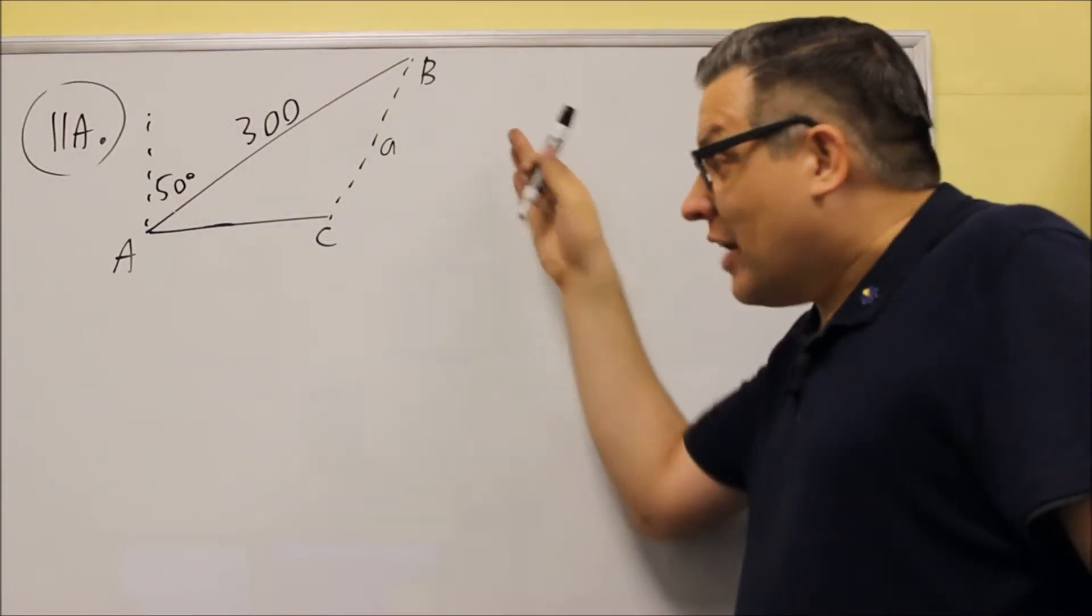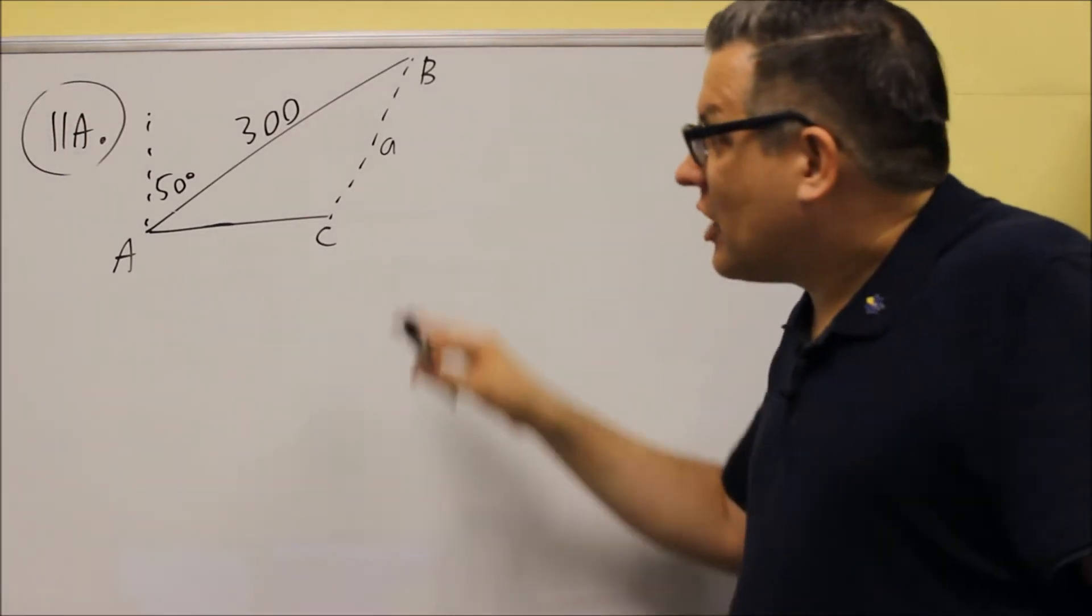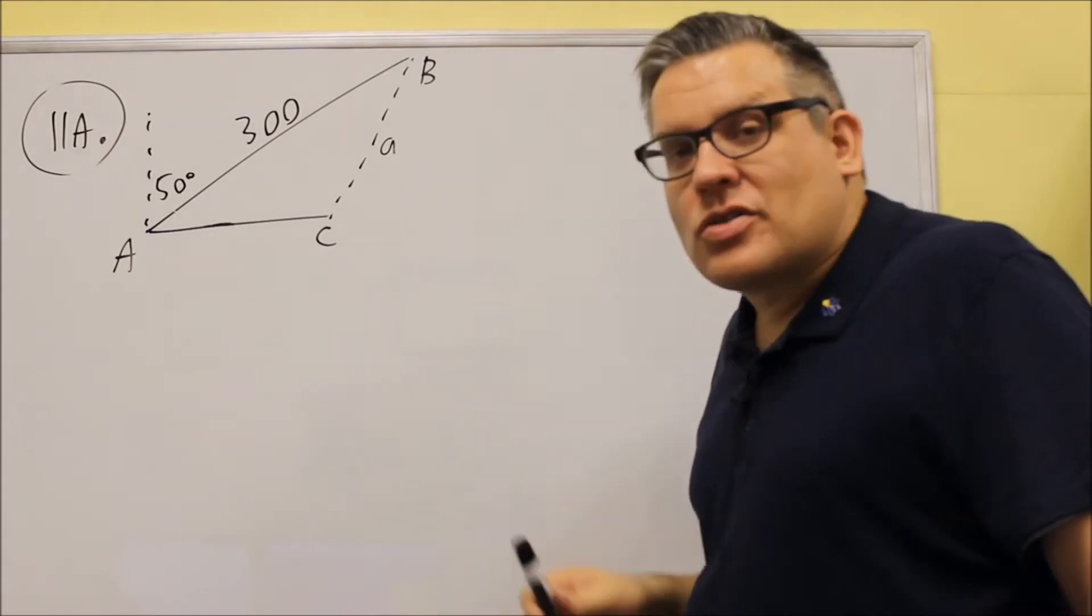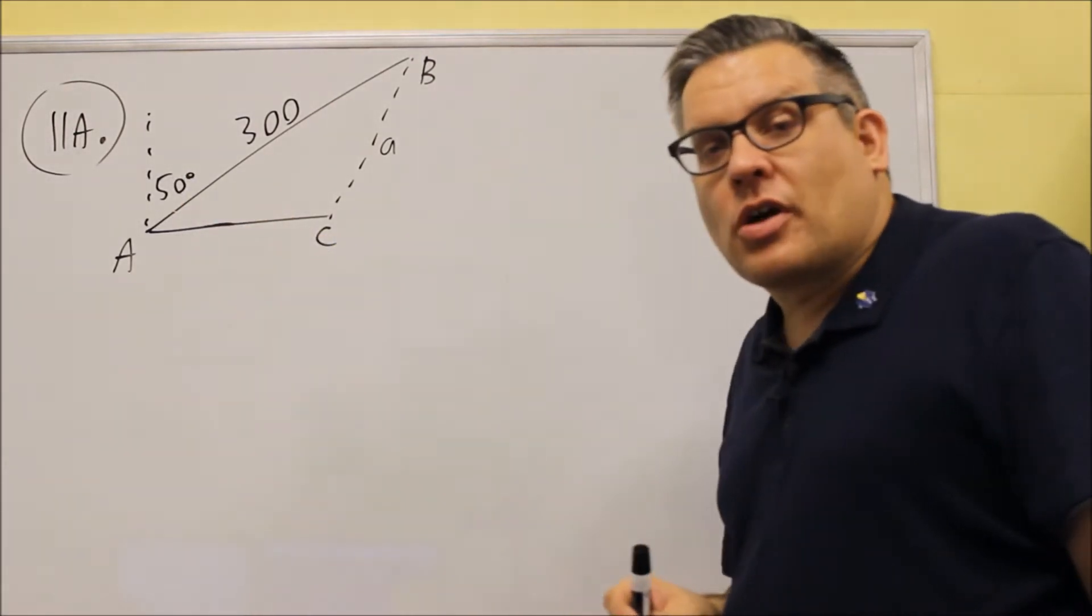So this is all labeled for you. This kind of problem, you'll have some kind of picture that would be given. So it's 300 miles there, 50 degrees is on the outside of the triangle because it's a bearing.